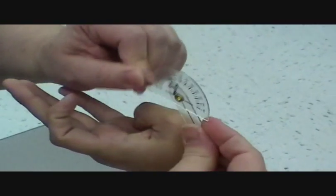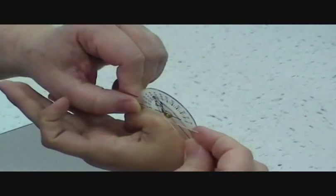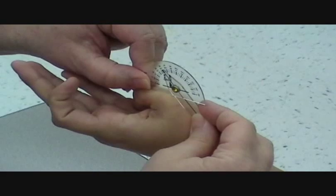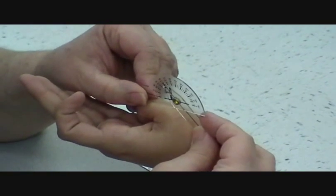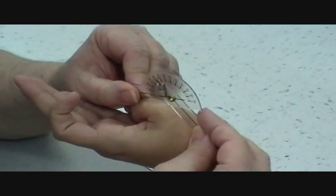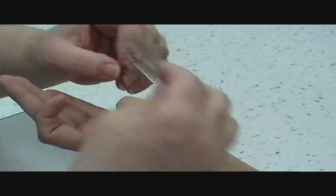And then bend as much as you can at both joints. So that's about 60. So our MP of the thumb, we've got about 5 degrees to 60 degrees.